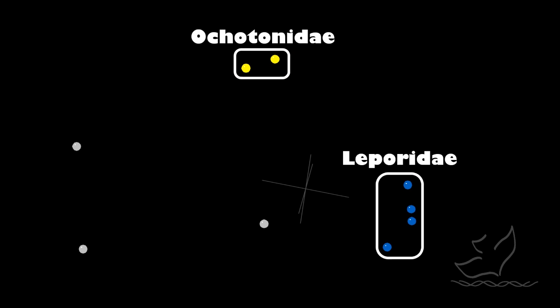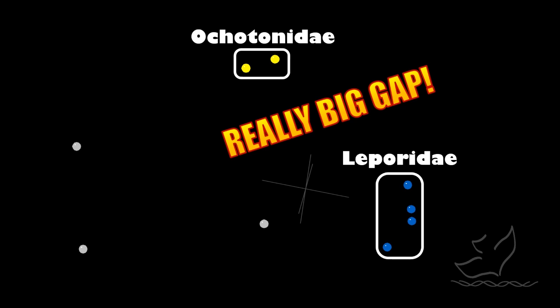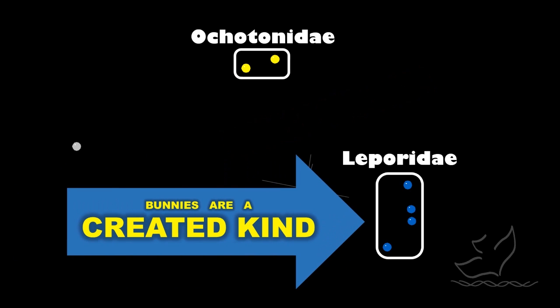Over here in yellow, we have the pikas, family Ochotonidae, and they are very similar to one another as well. But they are noticeably different from the bunnies — we've already mentioned the ears and the hind legs. In the diagram there's a really big gap between them, and from my statistical studies that difference is significant. Based on that, I would conclude that the bunnies are a created kind — all of our modern bunnies are members of a single created family.